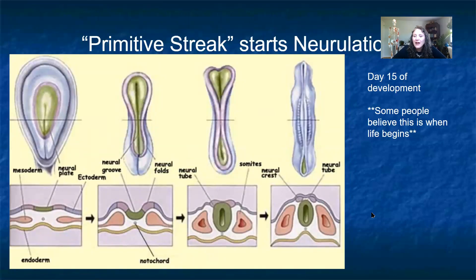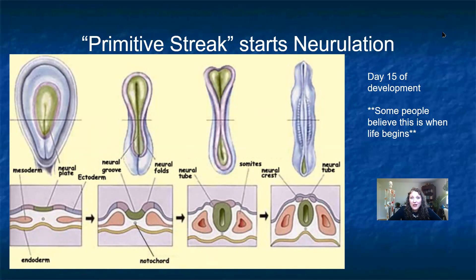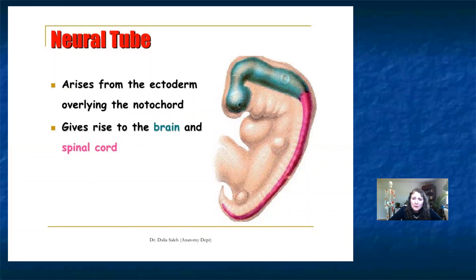After gastrulation, with those three layers suspended in the disc, we have neurulation — related to the nervous system. This creates something called a primitive streak, which literally looks like someone drew a line in clay. That primitive streak causes a line to form in the three germ layers, infolds to create a hollow tube, which becomes our notochord — our spinal cord and brain. The top portion of that neural tube gives rise to the brain; the bottom portion gives rise to the spinal cord.